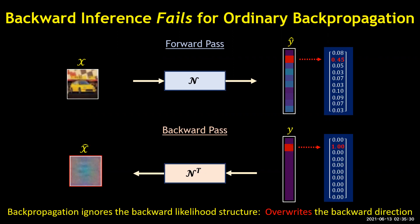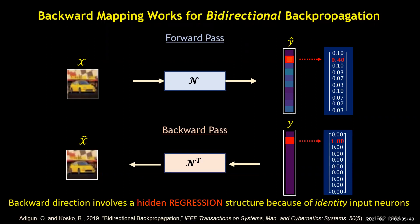I've indicated the network with the transpose symbol in the backwards direction because we're passing through the transpose of the weight matrices in bidirectional fashion. In contrast, if we take into account the likelihood structure at the input and jointly train with that information, then we don't get noise at the input — we get back a meaningful image: a good approximation of the car that stimulated the network in the forward direction.